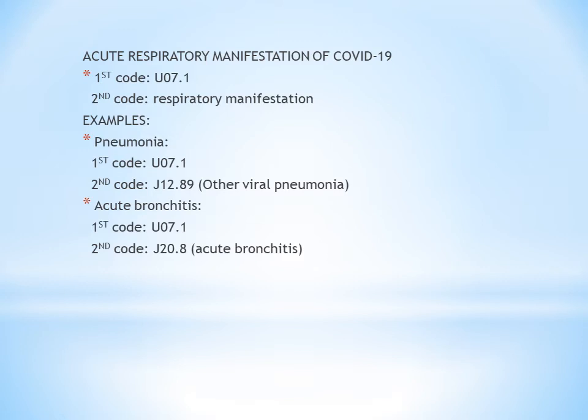Next, for acute respiratory manifestations of COVID-19: when a patient has a respiratory manifestation, the sequencing is — first code U07.1 (COVID-19), then the respiratory manifestation code second. For example, if the patient has COVID-19 with pneumonia, we code U07.1 first, then the pneumonia code.